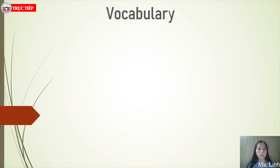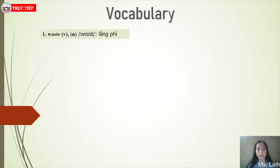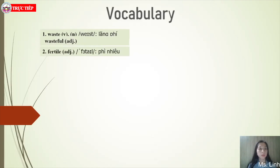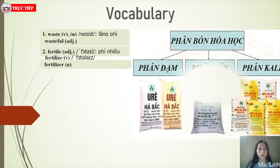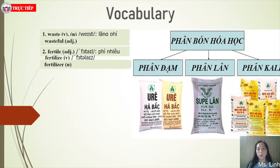Now, vocabulary. Number one: waste — verb and noun, same form. Related adjective: wasteful. Number two: fertile — adjective. Related verb: fertilize. Note the pronunciation of both words: fertile, fertilize. Related noun: fertilizer — meaning phân bón hóa học (chemical fertilizer), which includes various types such as nitrogen, phosphorus, and potassium fertilizers.